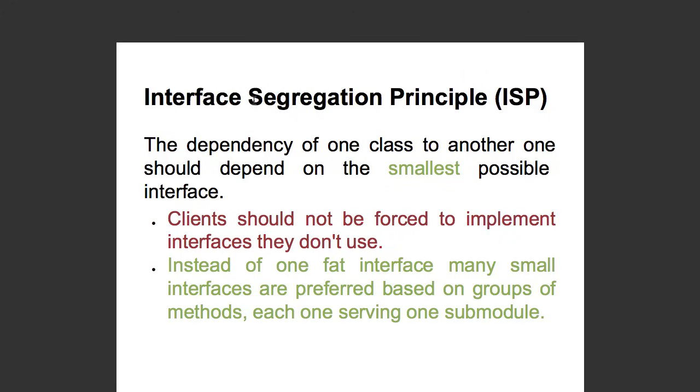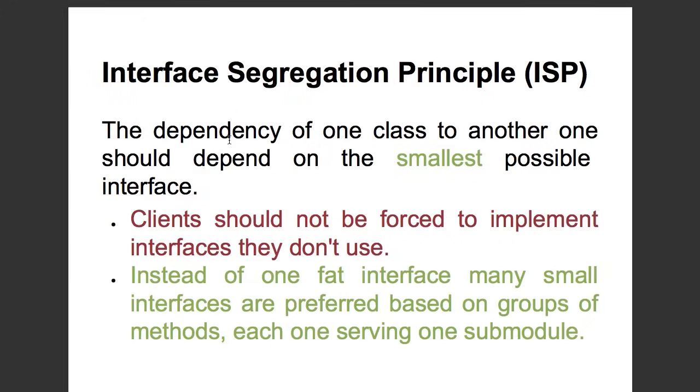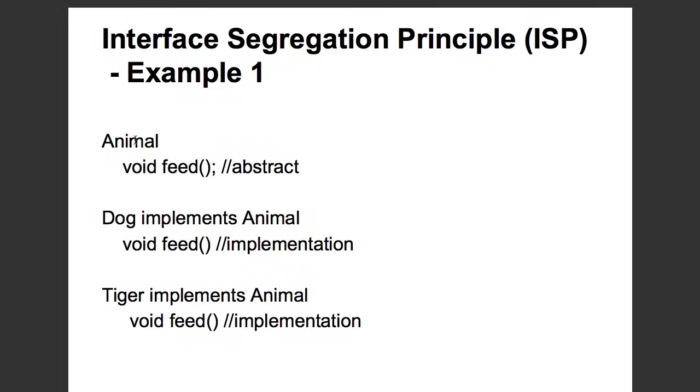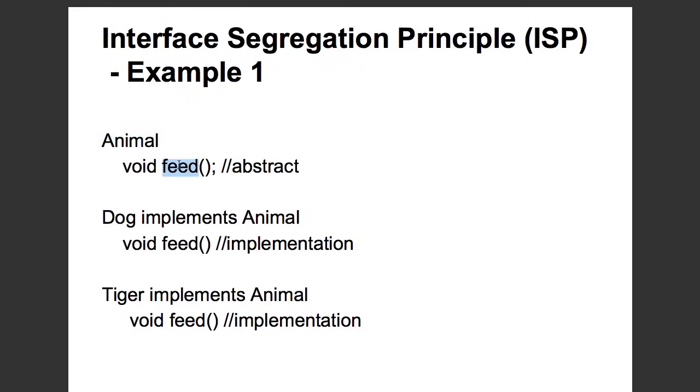The fourth principle we would be talking about is called the Interface Segregation Principle. When two systems or two classes are talking to each other, then they should have the smallest possible interface that is defined. Why is that important? Let's take an example.